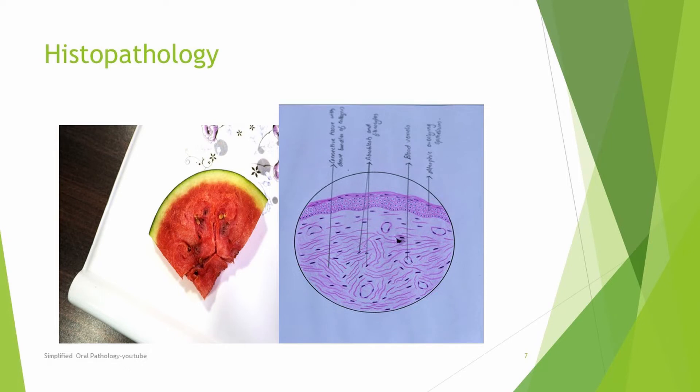When discussing histopathology, we will compare the histopathology diagram to the watermelon model from the previous video. There is an overlying epithelium — the green part — similar to the diagram, and the red part represents the stroma. Fibroma is a soft tissue lesion, so the pathology has more to do with the underlying stroma than the epithelium. The signifying features will be found in the stroma.